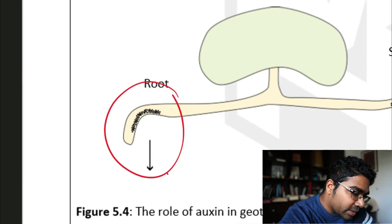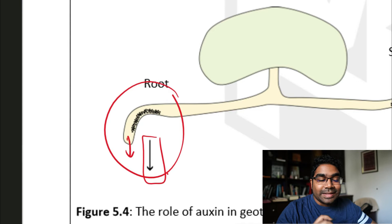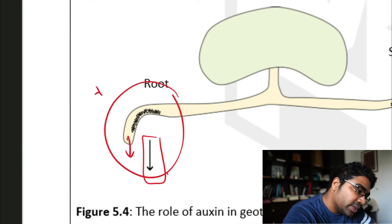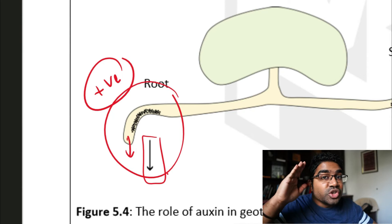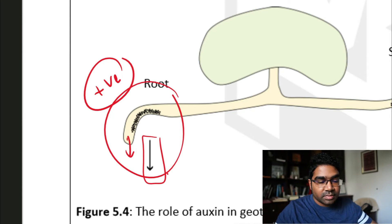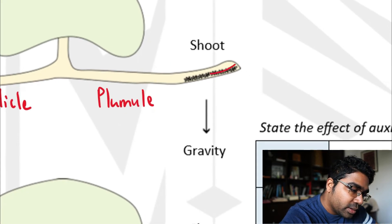Since gravity is acting downwards and the root is also growing downwards, this is known as positive geotropism, because the direction of growth is towards the stimulus. And then, when we look at the shoot on this side, we